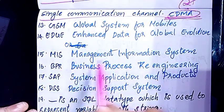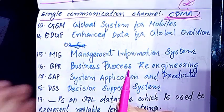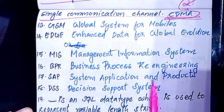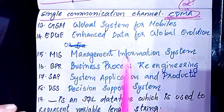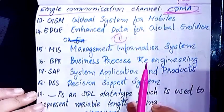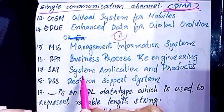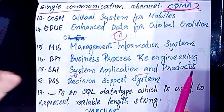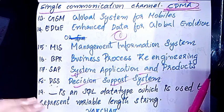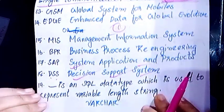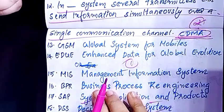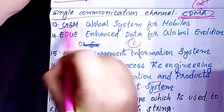EDGE: Enhanced Data for Global Evolution. MIS: Management Information System. BPR: Business Process Re-Engineering. SAP: System Application and Products. DSS: Decision Support System.